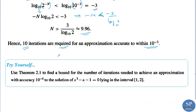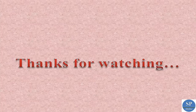Now you can try this problem yourself: use the above theorem to find a bound for the number of iterations needed to achieve an approximation with accuracy 10^(-4) to the solution of x³ - x - 1 = 0 lying in the interval [1, 2].